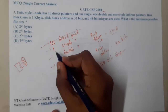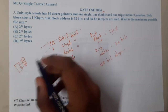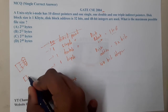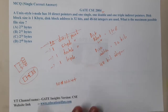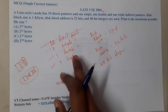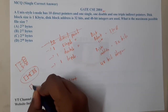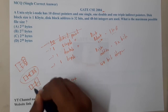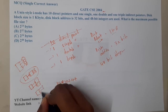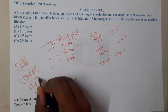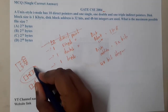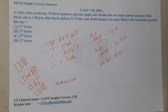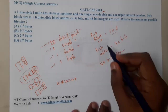Moving to the next layer: the single indirect pointer points to one block, which in turn points to multiple data blocks. The double indirect has two levels of indirection, and the triple indirect has three levels, each pointing further down the chain.